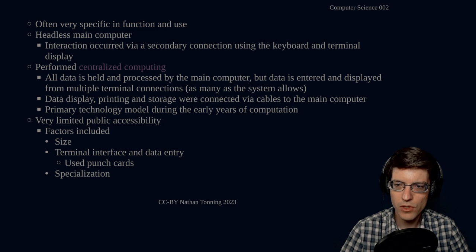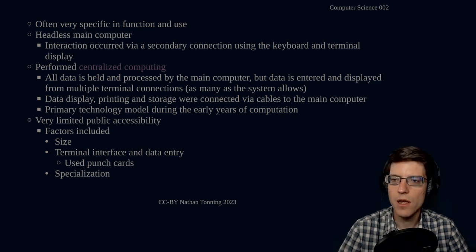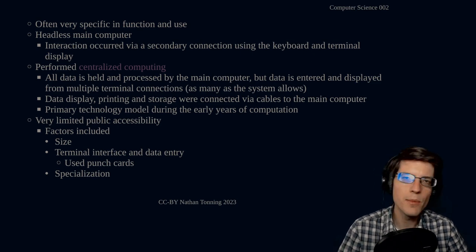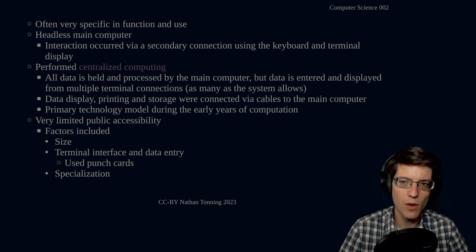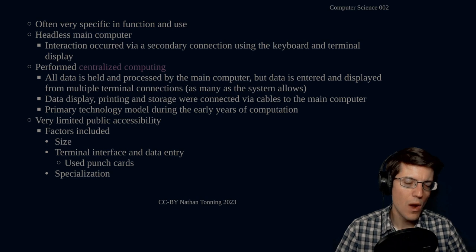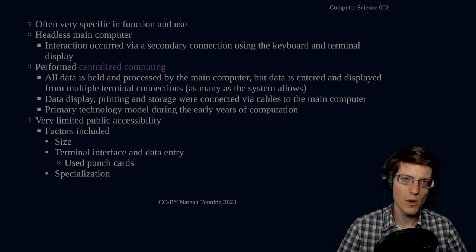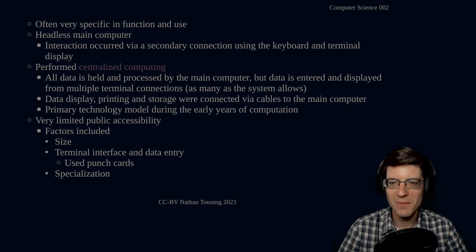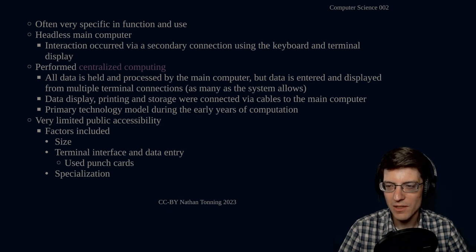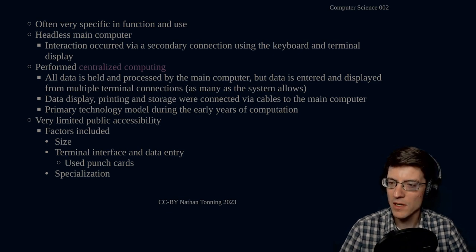We see here that centralized computing was the primary technology model during the early years of computation. Why was centralized computing the primary technology model? It all gets back to money, which therefore limited public accessibility, but money was not the only reason.